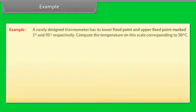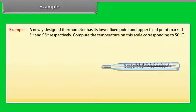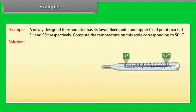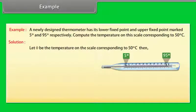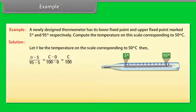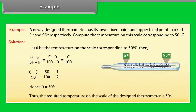Example: A newly designed thermometer has its lower fixed point and upper fixed point marked as 5° and 95° respectively. Compute the temperature on this scale corresponding to 50° Celsius. Solution: Let θ be the temperature on the scale corresponding to 50° Celsius. Then (θ − 5)/(95 − 5) = C/100. Simplifying: (θ − 5)/90 = 50/100. Hence θ = 50°. The required temperature on the designed thermometer's scale is 50°.